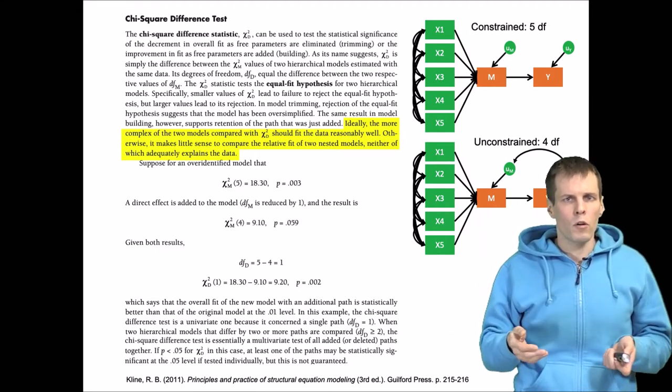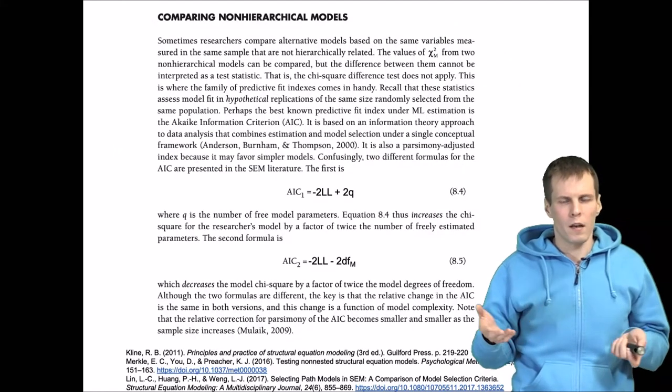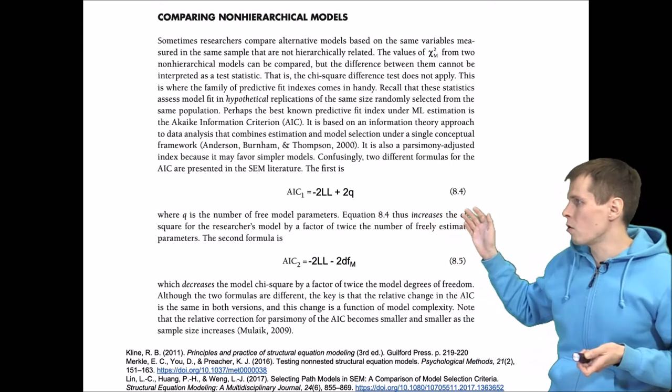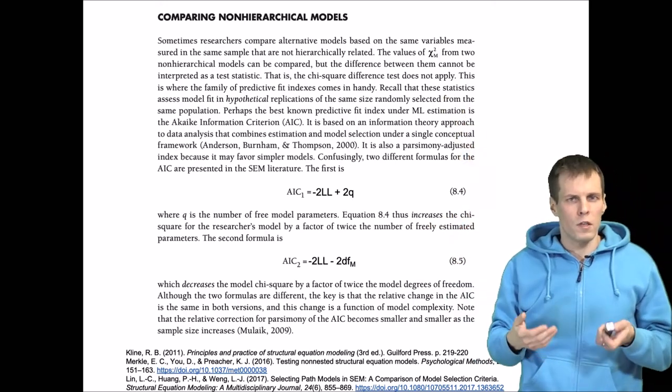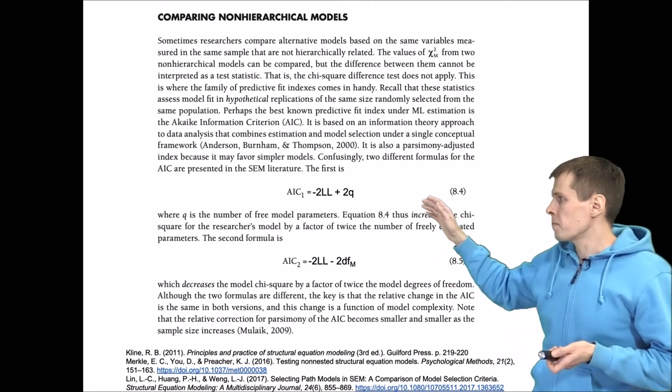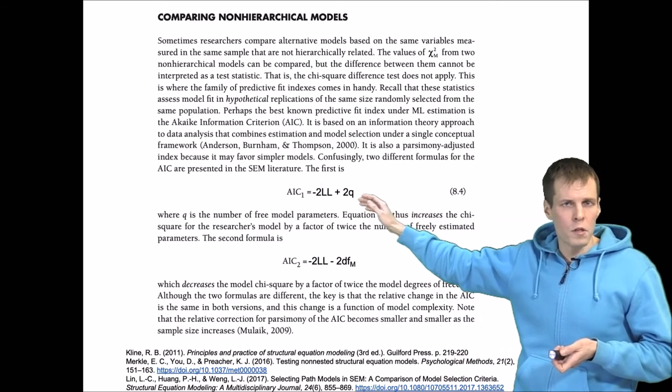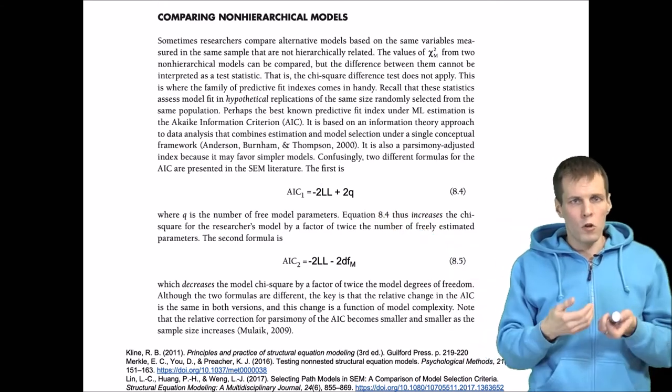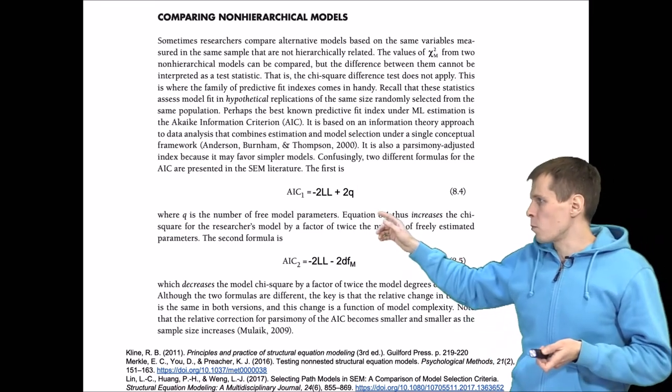Another kind of model comparison is the non-nested model comparison. We can compare what Klein calls non-hierarchical models, and the most commonly used statistic for this comparison is the AIC statistic. The idea of AIC statistic is that we compare the likelihoods, which are also used to calculate the chi-square statistic, but then we also penalize for model complexity.